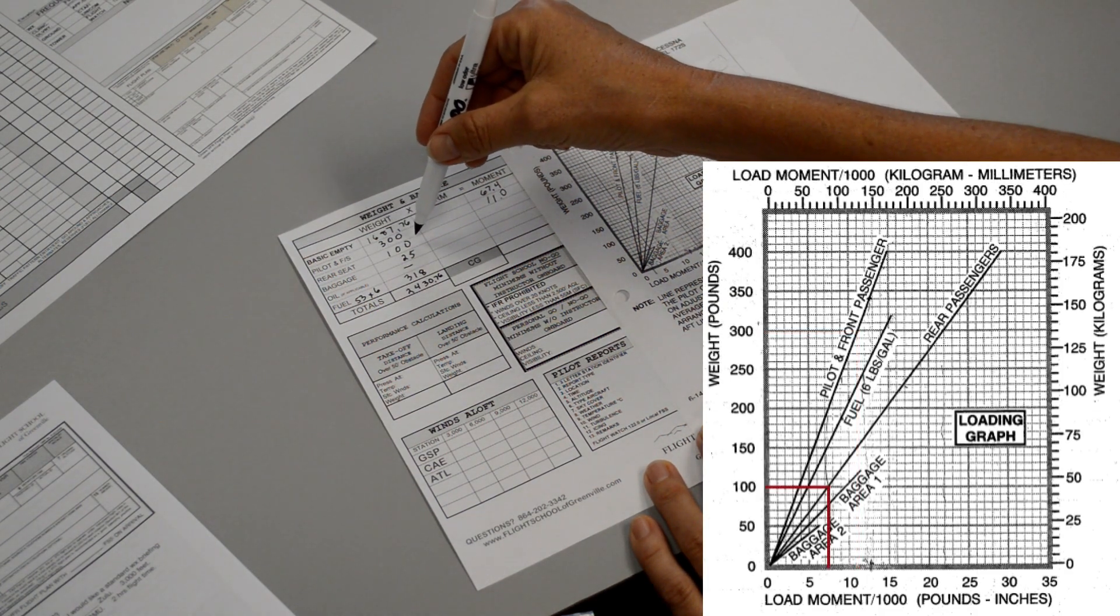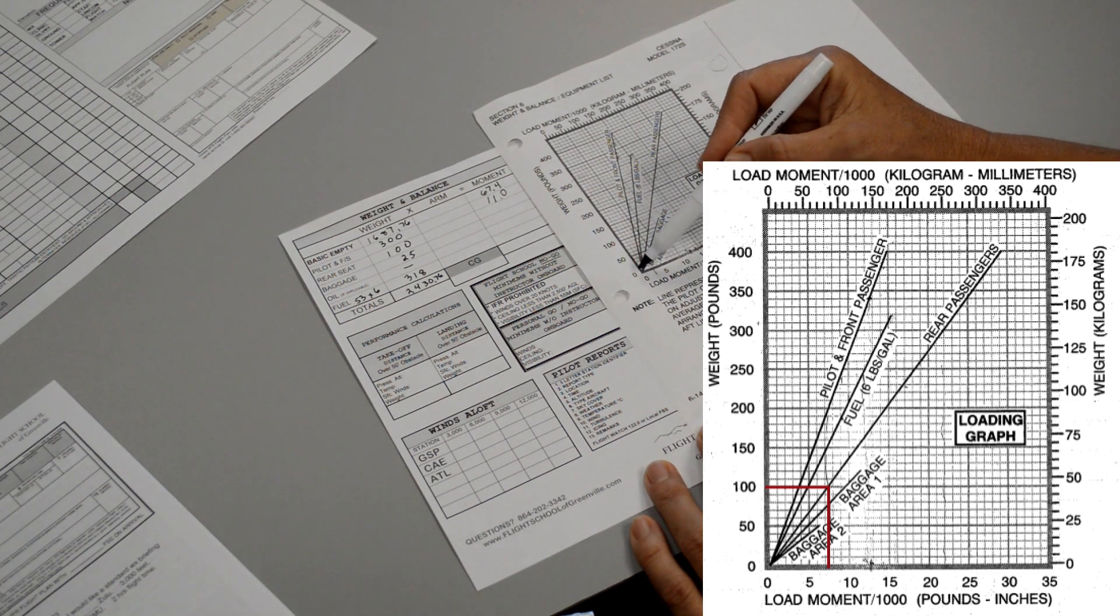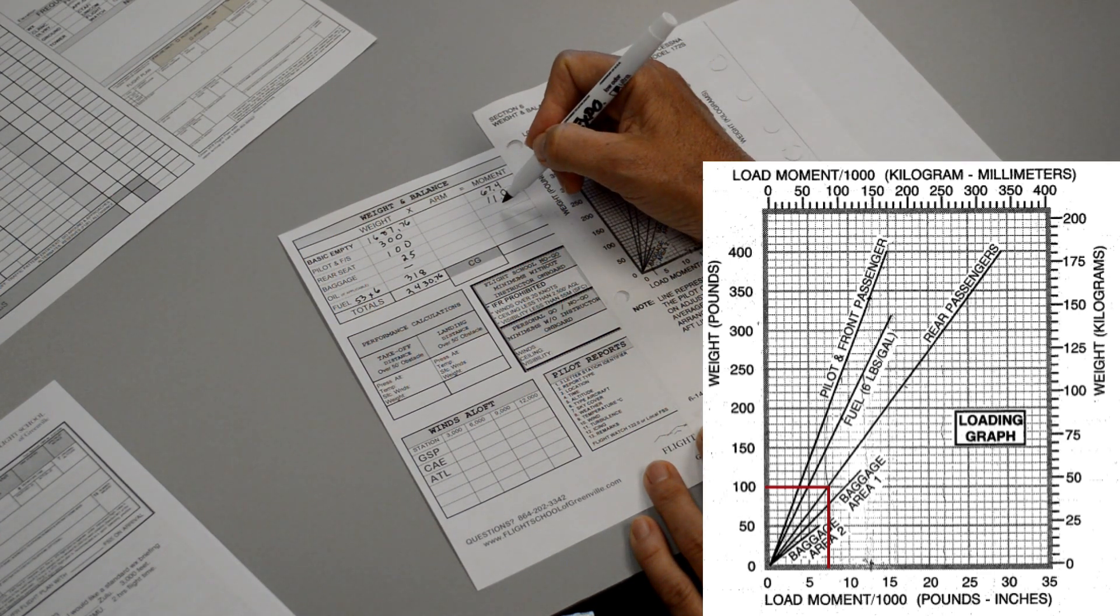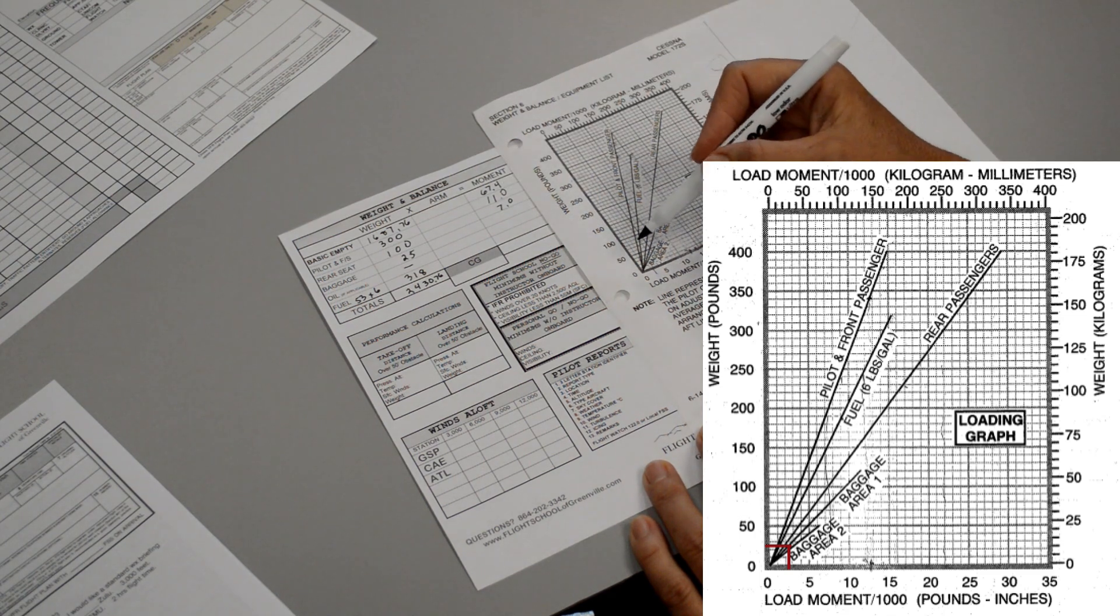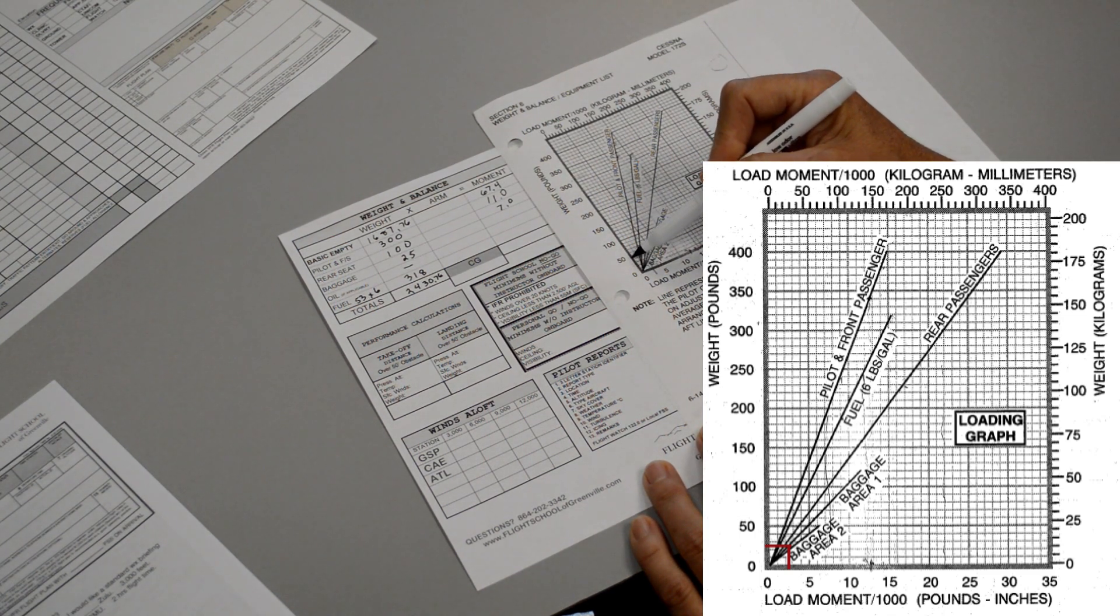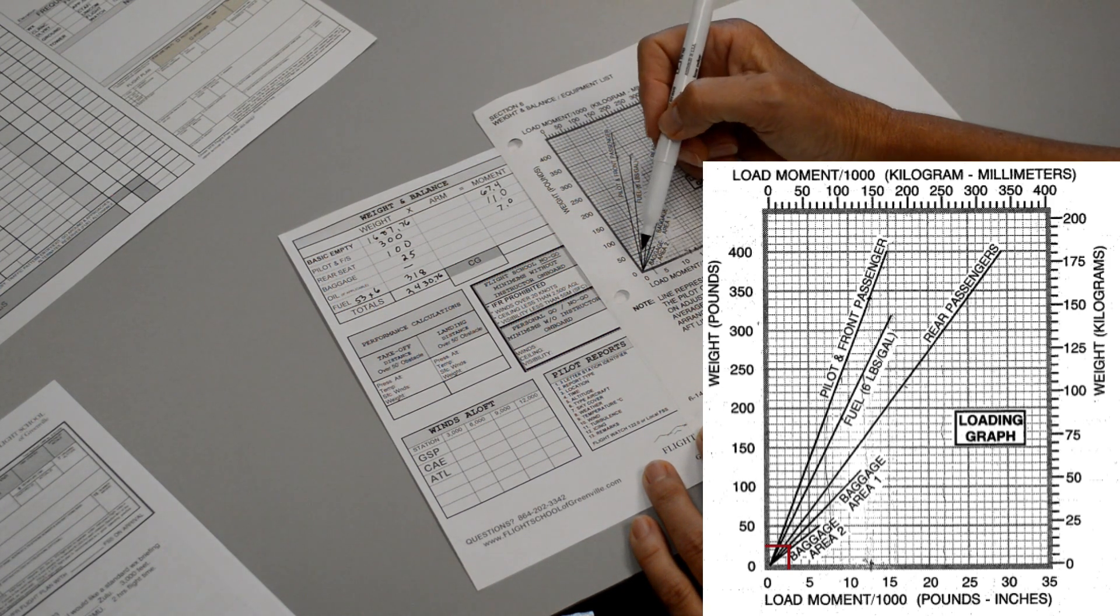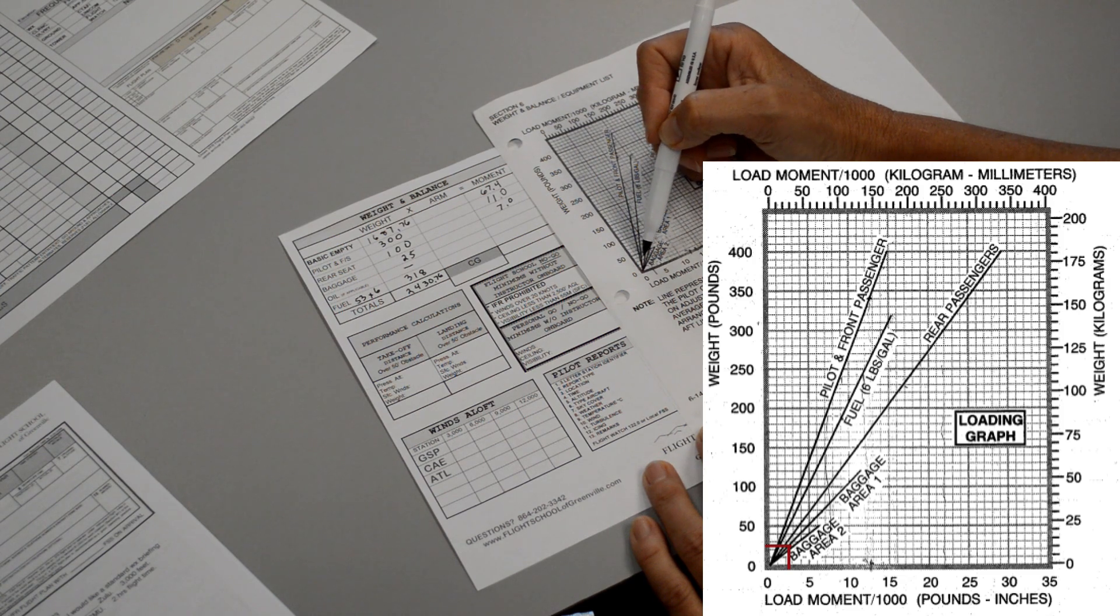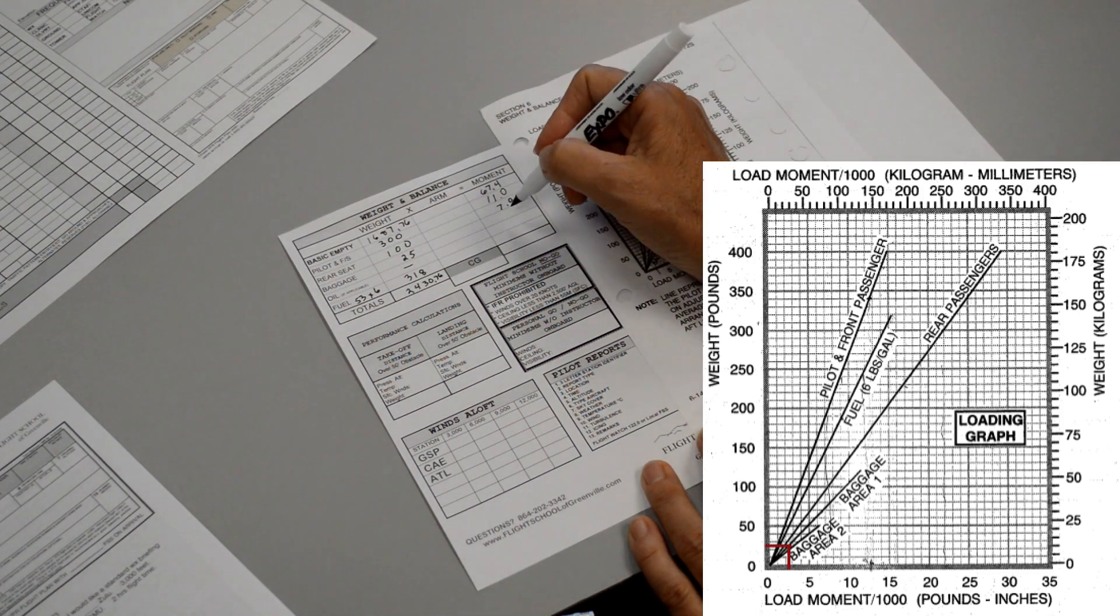Now it appears we're taking someone as a passenger that weighs 100 pounds. So we will go up the side and find 100 pounds, go across until we find the one that says rear passengers. And it looks like it is sitting at about 7. So our moment for the rear passengers will be 7.0. And then now we're on to the baggage. Baggage is 25 pounds. So we run up the side to find 25 pounds. And note there is a baggage 1 and a baggage 2. We have it in the forward baggage area so it will be baggage 1. So we come up about 25 pounds and go across and it looks like it's about 2.5. So 2.5 is our moment for the baggage.